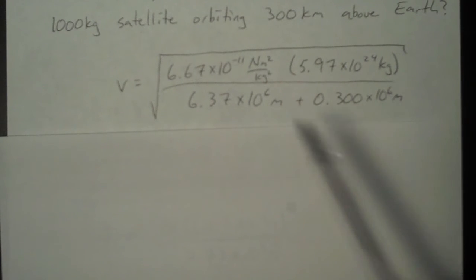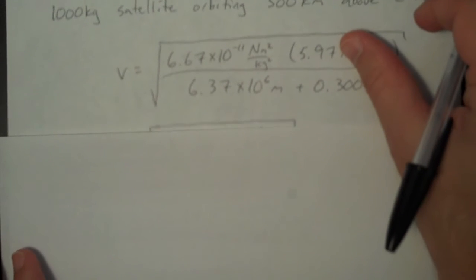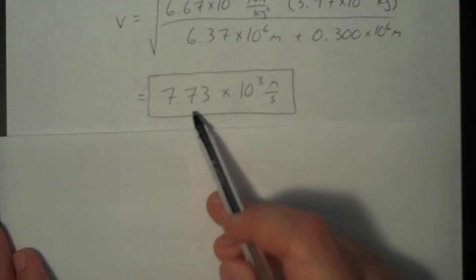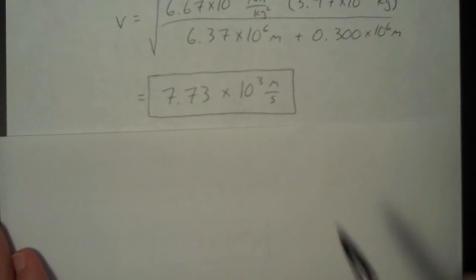And then, of course, we need to make sure we're in standard units for length, which is the meter. To three sig figs, your speed is 7.73 times 10 to the third meters per second.